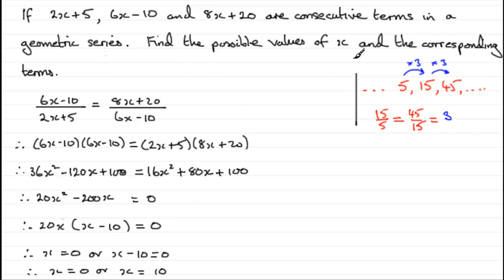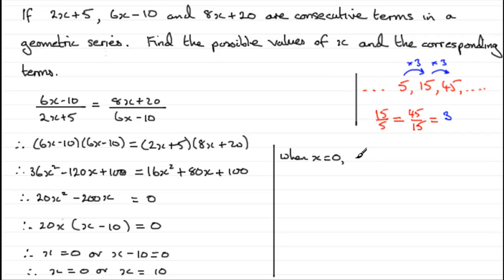So we've got two values of x, which is what we expected since the problem asked for possible values. Now we just need to find the corresponding terms by putting x equals 0 and x equals 10 back into the three expressions. When x is 0, the terms are 5, minus 10, and 20 — three consecutive terms in the sequence.